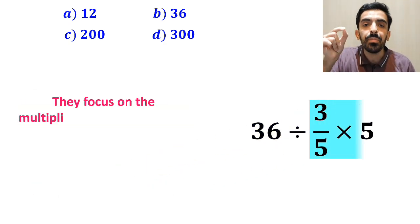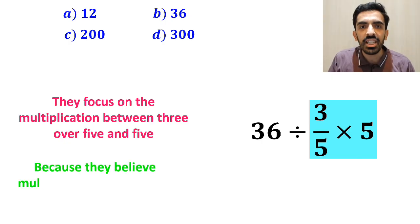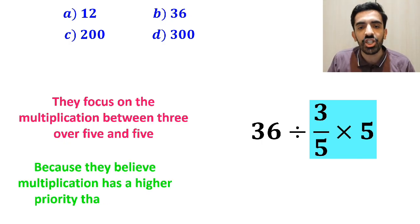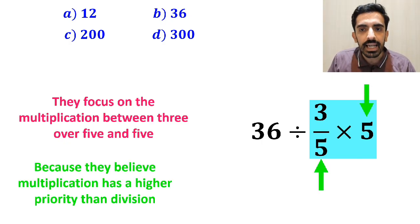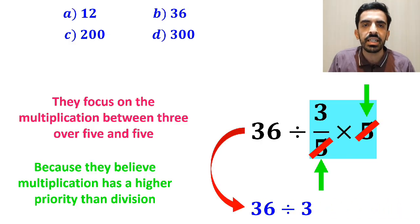In the next step, they focus on the multiplication between 3 over 5 and 5, because they believe multiplication has a higher priority than division. As you can see in the image, they simply cancel out the 5s, and this expression simplifies to 36 divided by 3, which finally gives them the answer 12.